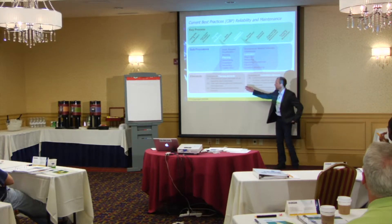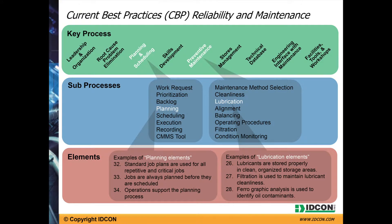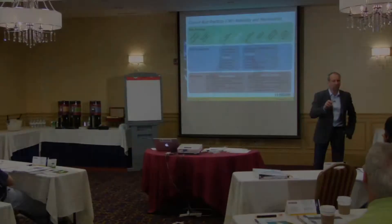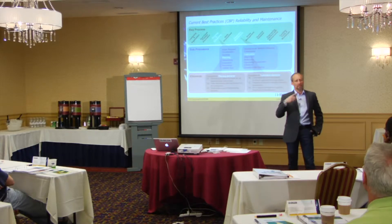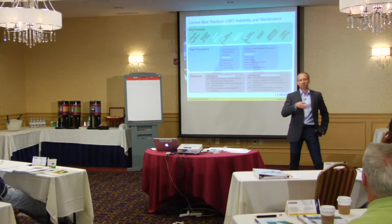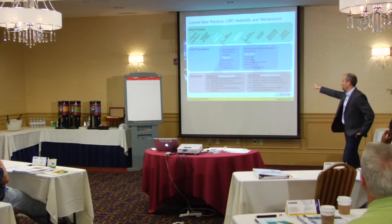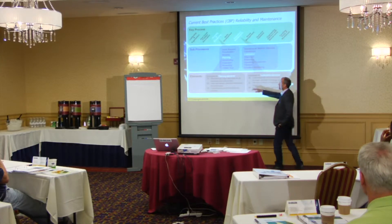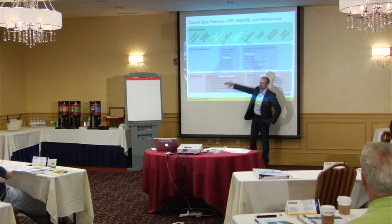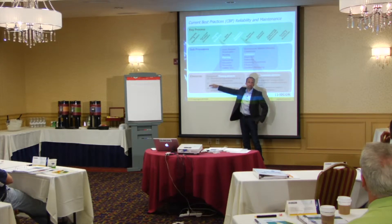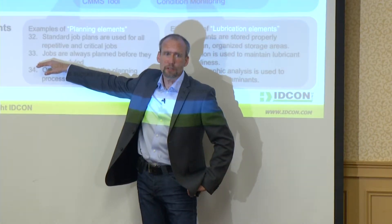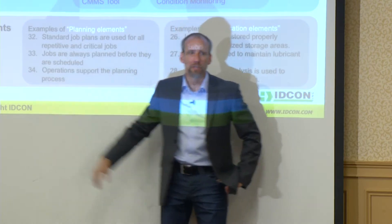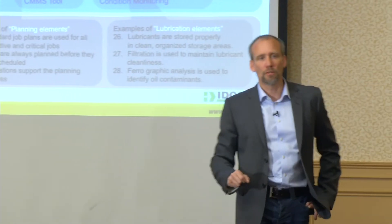For very critical and repetitive jobs, and depending on your skills level, you really need job plans — especially for the ones you don't know how to do. Things that are very easy to do you already know, but those are also easy to document, so you want to make sure you document the right ones. You don't need a job plan to change a light bulb — that doesn't make sense. You have to use some discretion and think about what you're doing.